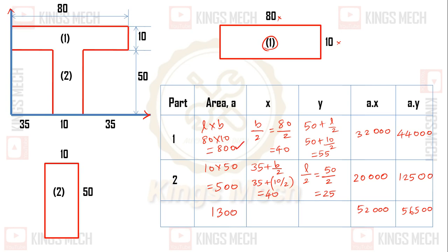That is the centroid of the first part. Next, the value of x: the centroid axis is touching the y-axis, so we can take b by 2. That is, b value of 80 divided by 2, which is nothing but 40. In the horizontal direction, the x-axis length is 10 mm.